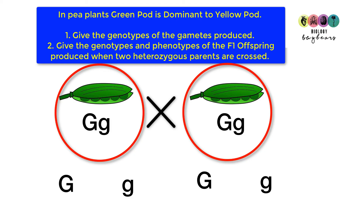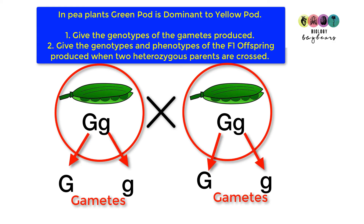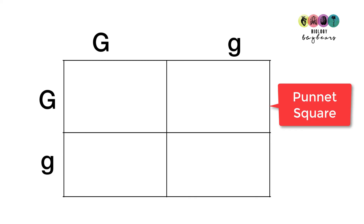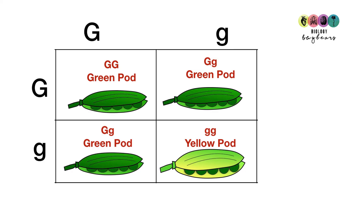To find the gametes, we look at the alleles each parent can give. Parent one can give either a big G or a little g, and parent two can also give either a big G or a little g. Now we create a Punnett square — a table with the gametes from one parent along the top and the other parent along the side, then combine the letters. The first offspring has genotype capital G, capital G — phenotype: green pod. The next is capital G, little g — phenotype: green pod. The third is capital G, small g — green pod. And finally, two little g's give a phenotype of yellow pod.